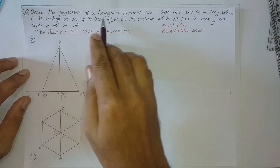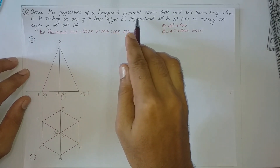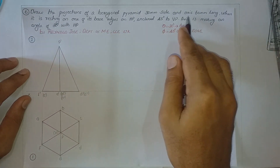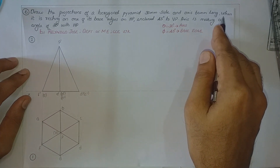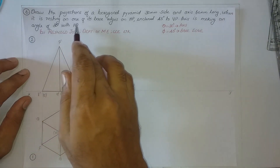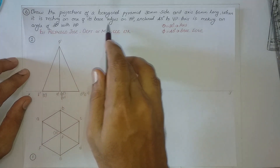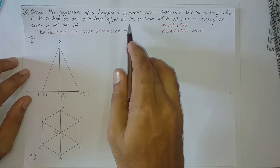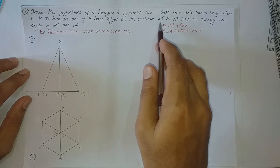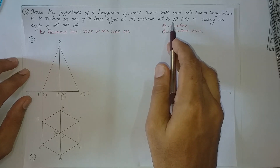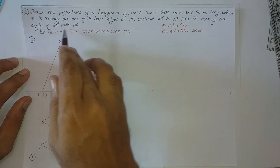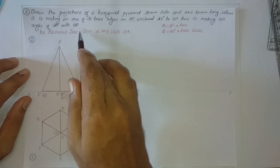Draw the projections of a hexagonal pyramid, 30mm side and axis 60mm long, when it is resting on one of its base edges on HP, inclined 45 degrees to VP, and the axis is making an angle of 30 degrees with HP.